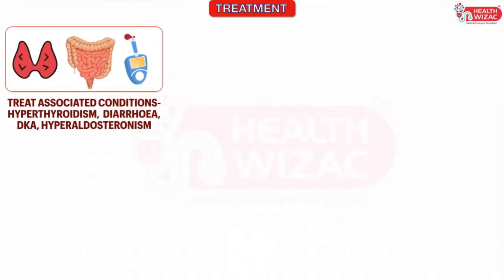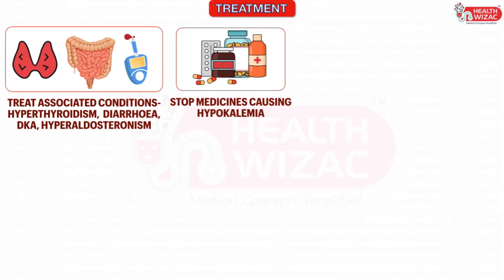While treating hypokalemia, we should first treat the underlying causes, which may be hyperthyroidism, diarrhea, diabetic ketoacidosis, or hyperaldosteronism. All drugs which are causing hypokalemia should either be stopped or modified accordingly.